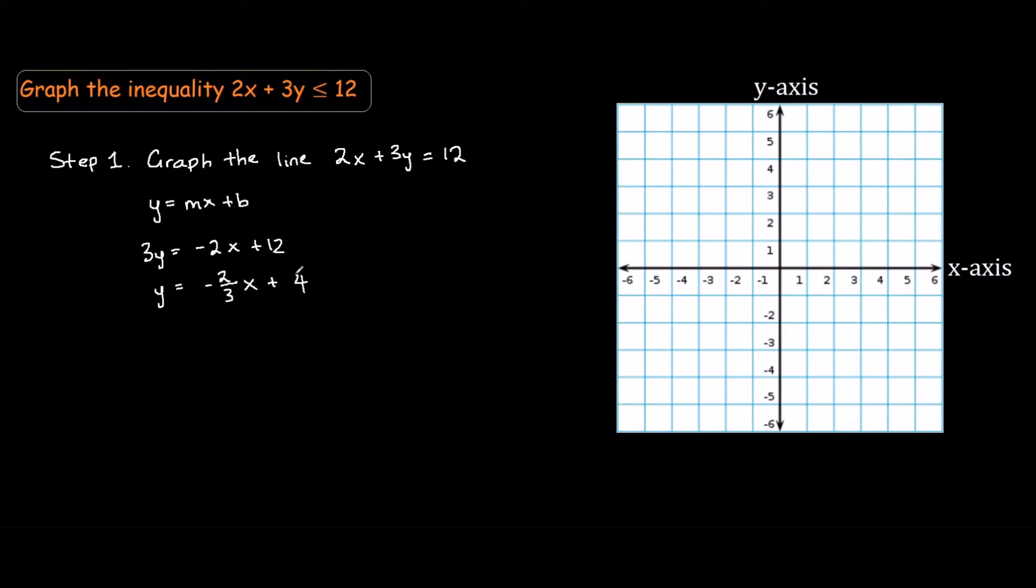We know the y-intercept is at 4 because when x equals 0, the y coordinate is 4, so we'll put a dot here. The slope is negative 2 thirds.